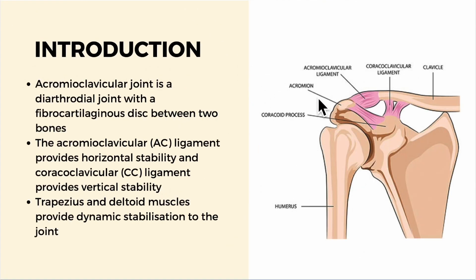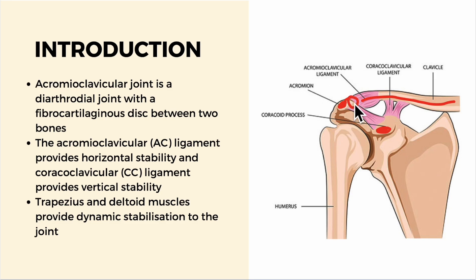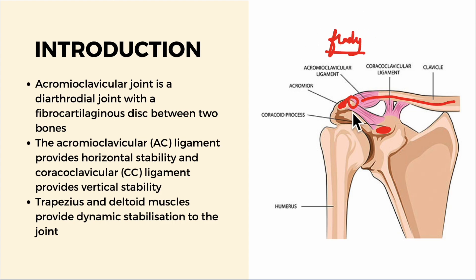As an introduction, in this diagram you can see the clavicle, the acromion process of the scapula, the coracoid process of the scapula, and the acromioclavicular joint. The acromioclavicular joint is a diarthrodial joint, which means it is a freely movable joint, also called a synovial joint. It has a fibrocartilaginous disc between the two bones — that is, between the acromion process and the clavicle.